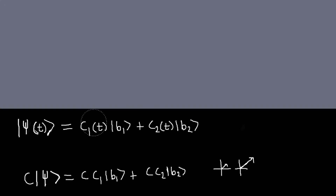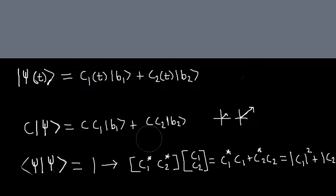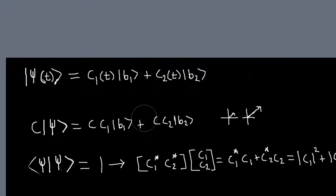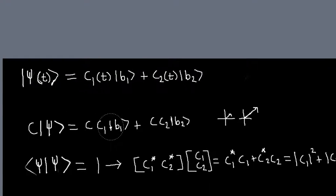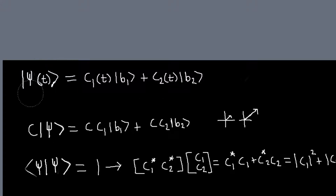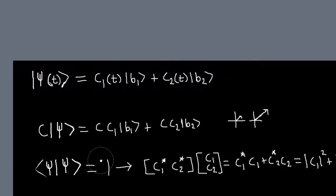It's only the relative values of C1 and C2 that matter and not their absolute value. You can use this fact to what's called normalize the state vector — not the basis states, but normalize the state vector. We'll see why we do that very shortly.